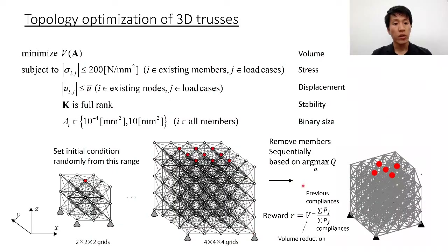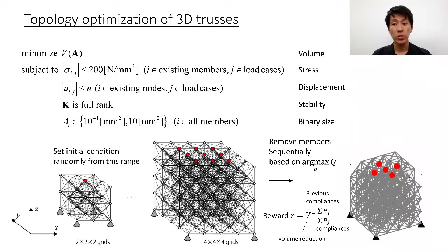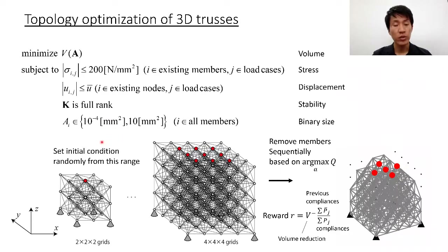We solve this binary optimization problem using the proposed method. Here, binary means each member is regarded as either existing or removed. We try to minimize the total structure volume subject to constraints on stress, displacement, and stability. To avoid numerical difficulty, a very small size is assigned to removed members.